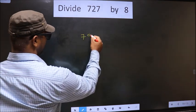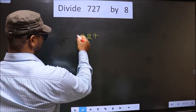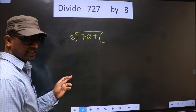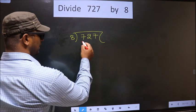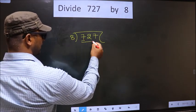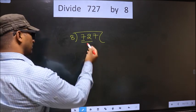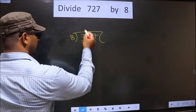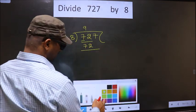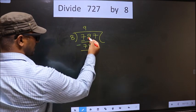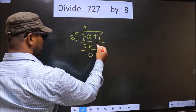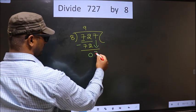That is 727, 8 here. Now here we have 7. 7 smaller than 8, so we take two numbers, that is 72. When do we get 72 in 8 table? 8 nines, 72. Now we subtract. 72 minus 72 is 0. Now you bring down the beside number, that is 7 down.